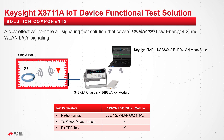The X8711A test solution helps to streamline the functional test processes of wireless-enabled IoT devices. It establishes the radio link connection with the DUT in normal operation mode and enables physical layer measurement. The over-the-air RF test and verification can be easily set up by adding an antenna coupler and shield box to the solution. Engineers can immediately test a wireless-enabled IoT device that works in normal operation with the X8711A, without the need to develop chipset control.